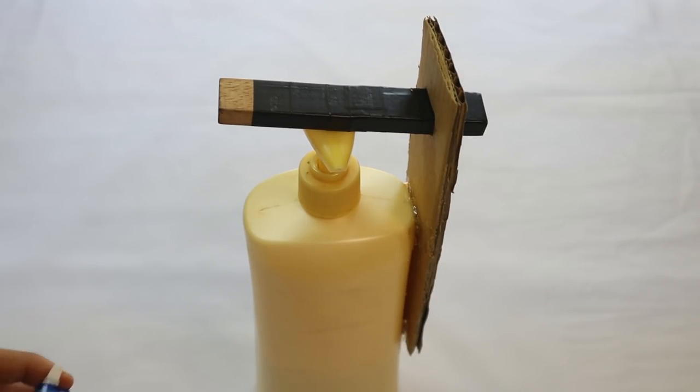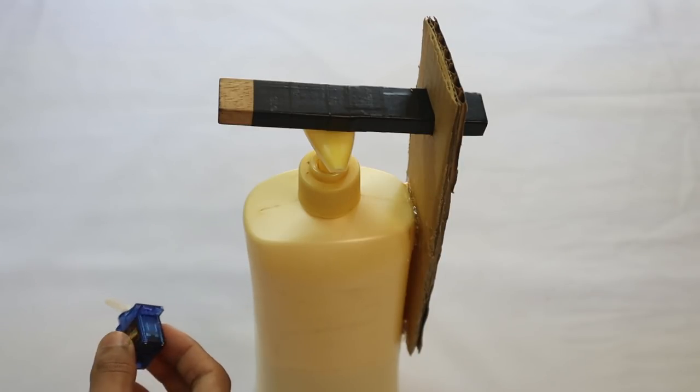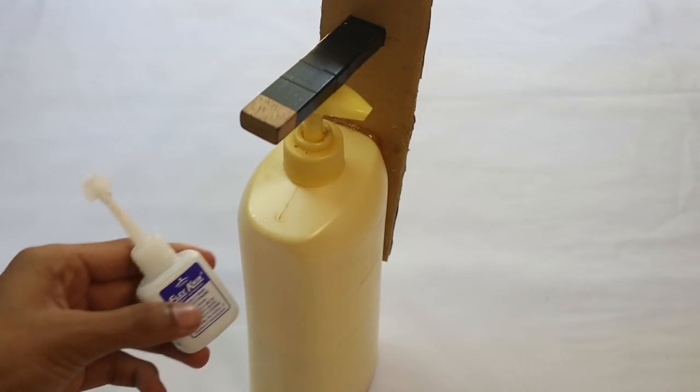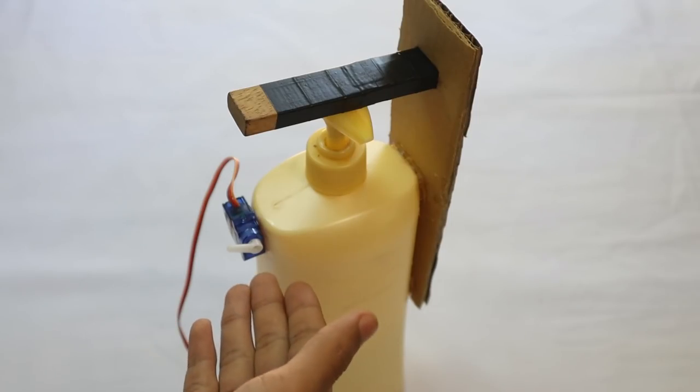Now the next step is to put your servo motor. I am going to put the servo motor on the sides like that. And I am going to be using some super glue for it. Now I have hot glued the servo.